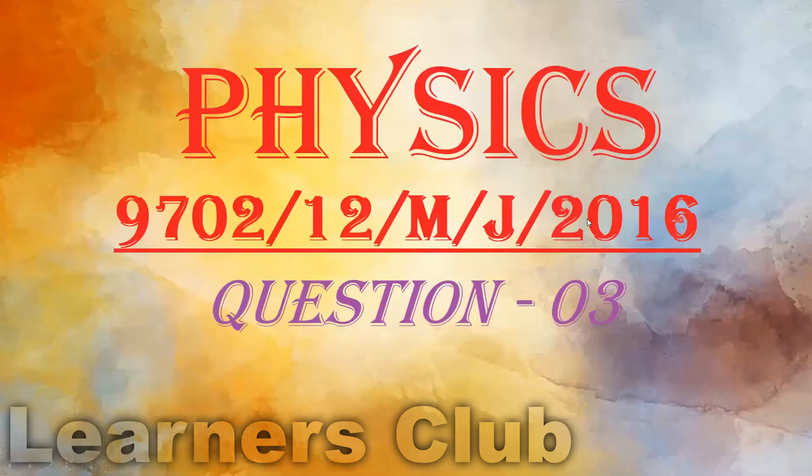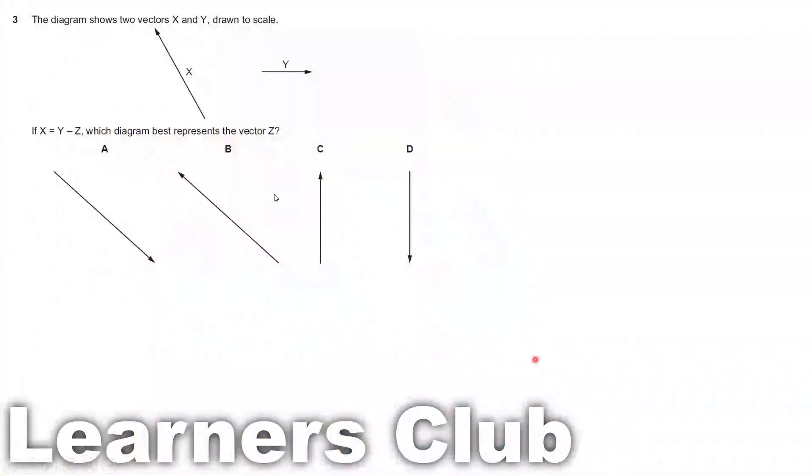Physics major in 2016 paper 12 question 3. The diagram shows two vectors x and y drawn to scale. If x is equal to y minus z, which diagram best represents the vector z?